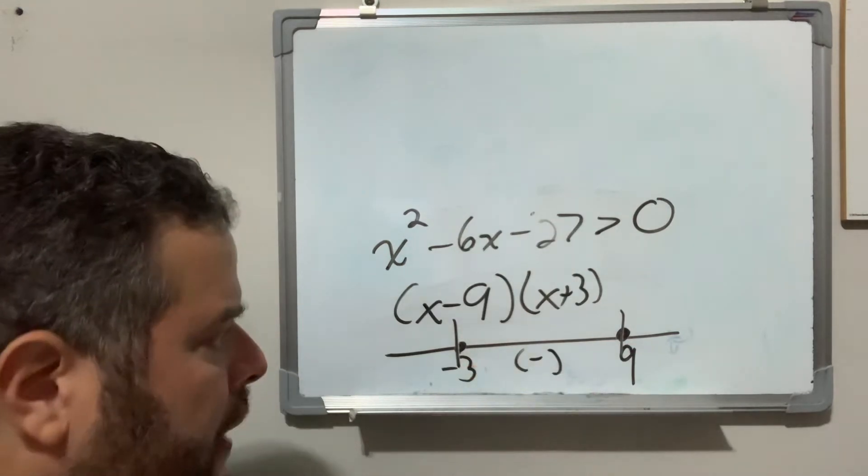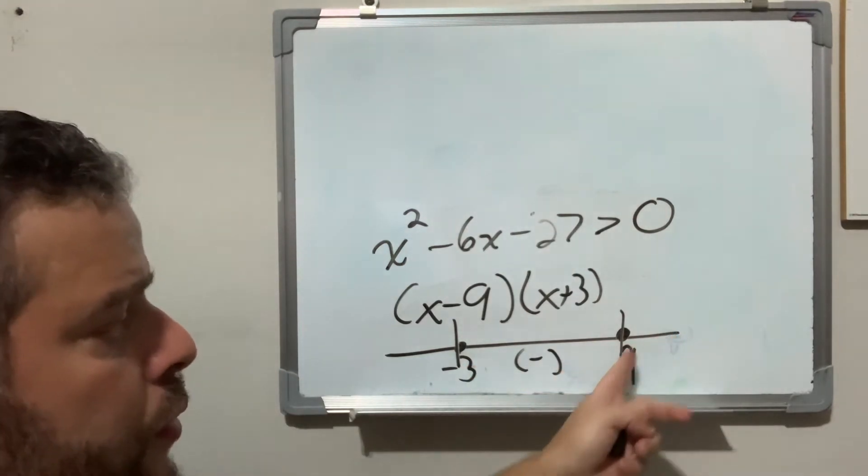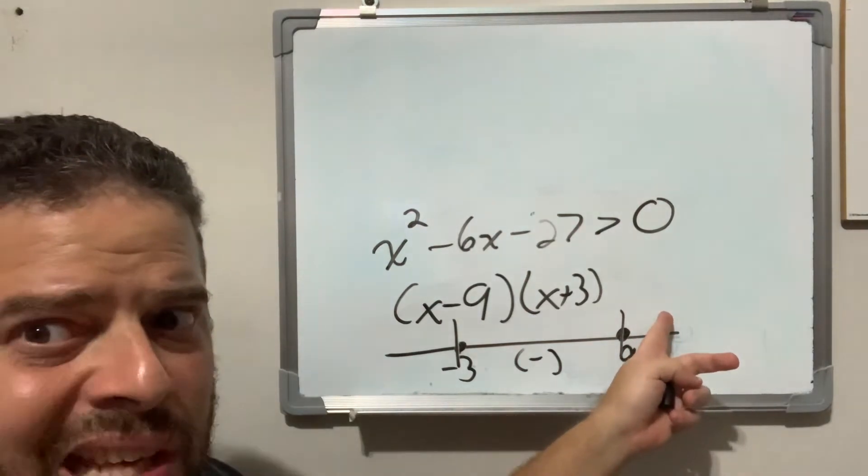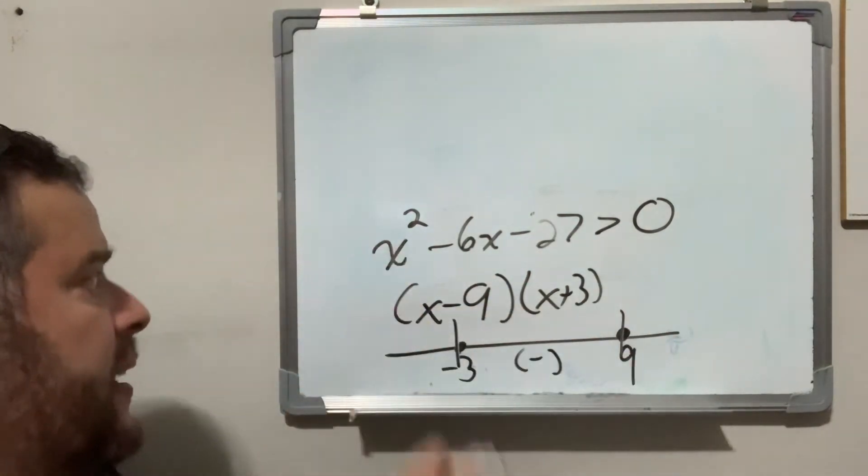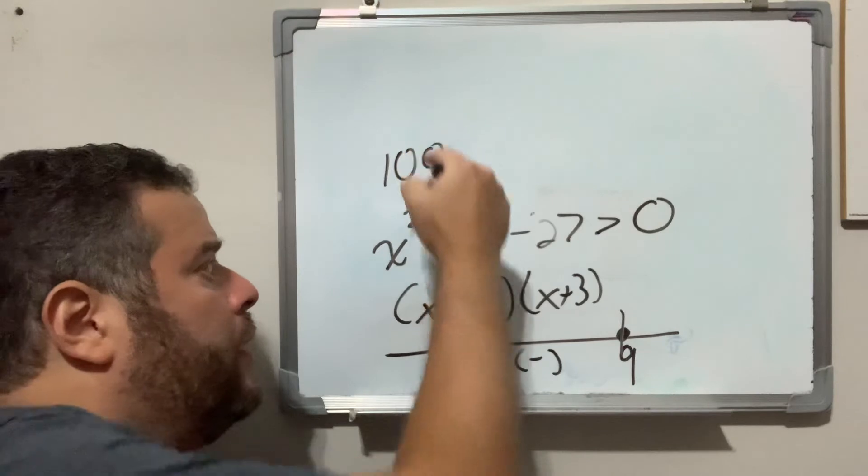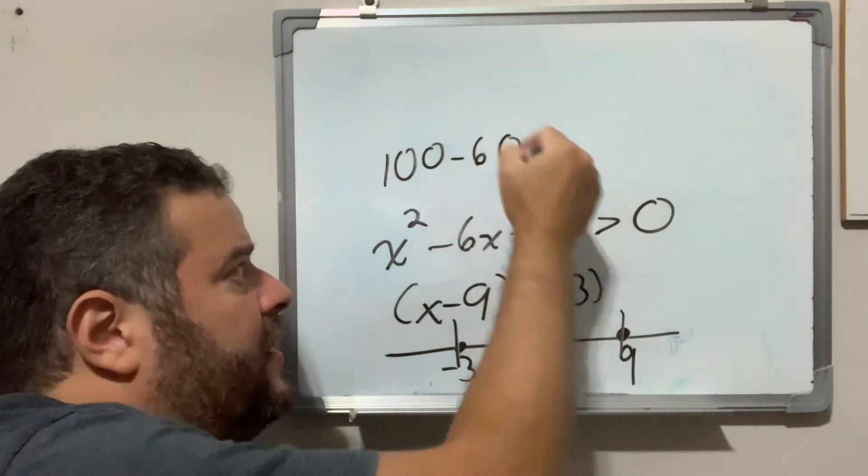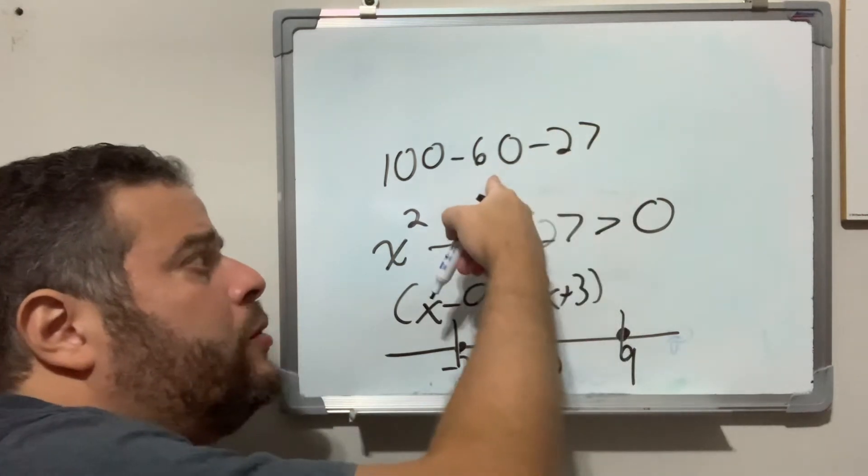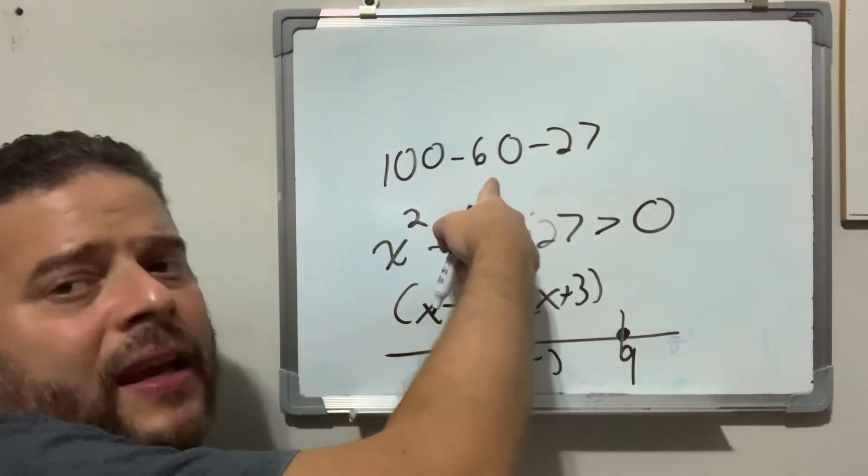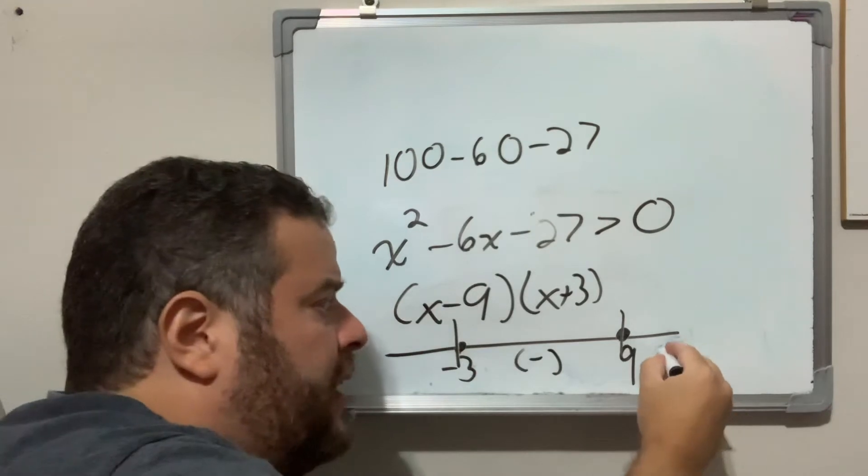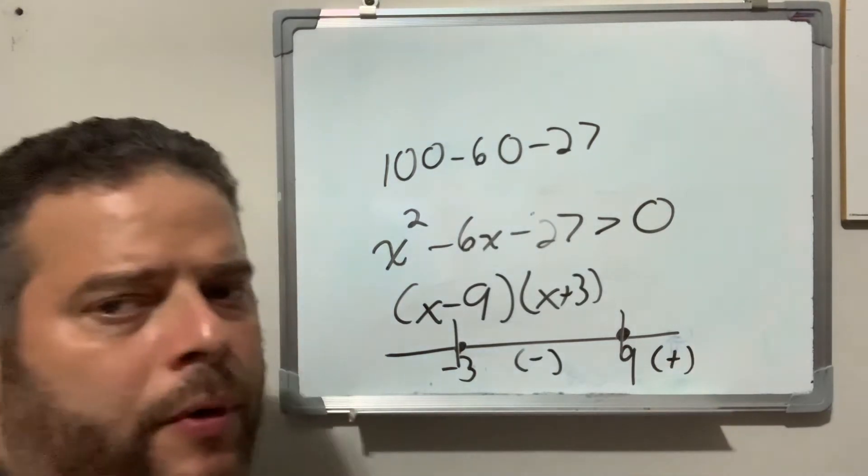That's all you care about. Next, I'm going to choose a value to the right of 9. I'm going to choose 10. 10 squared is 100, minus 6 times 10 is negative 60, minus 27. I add these two out, and I get negative 87. And still, you're going to end up with a positive number, 13.